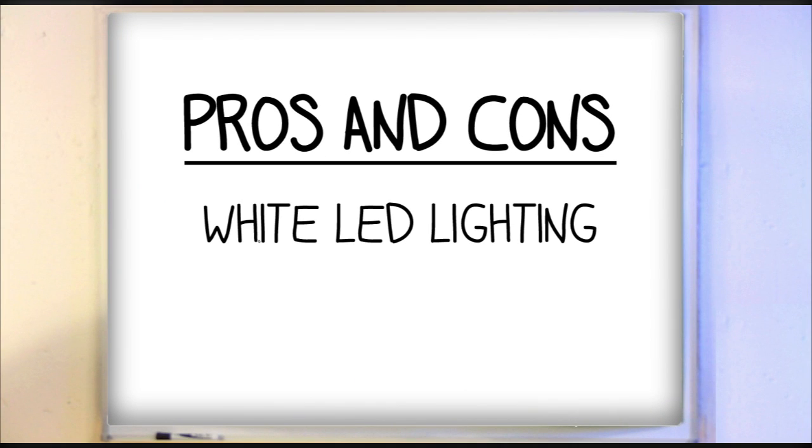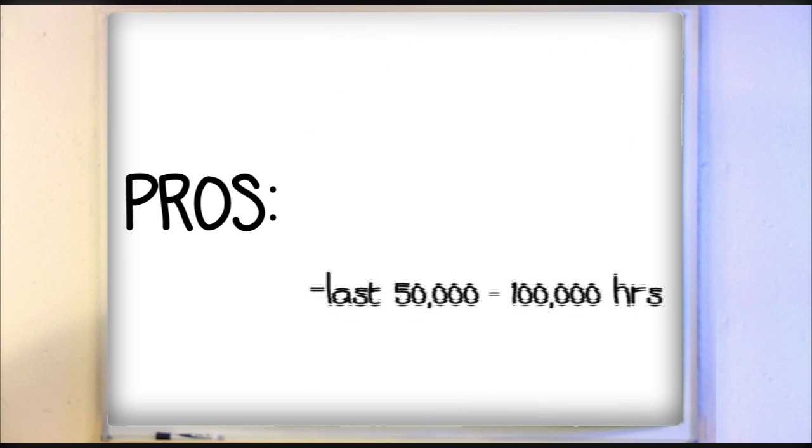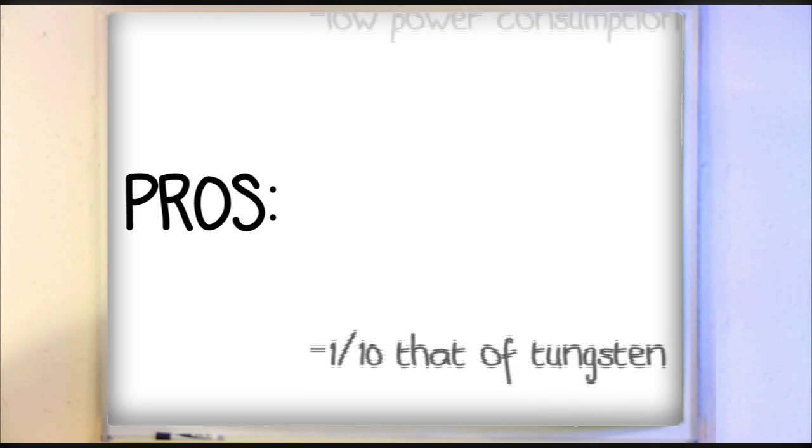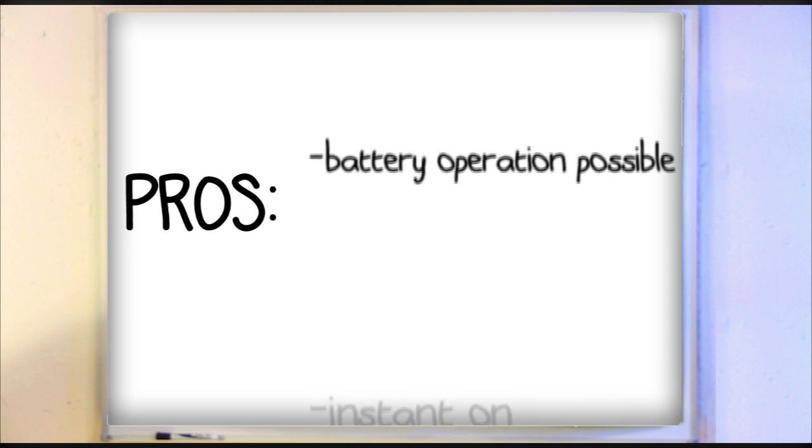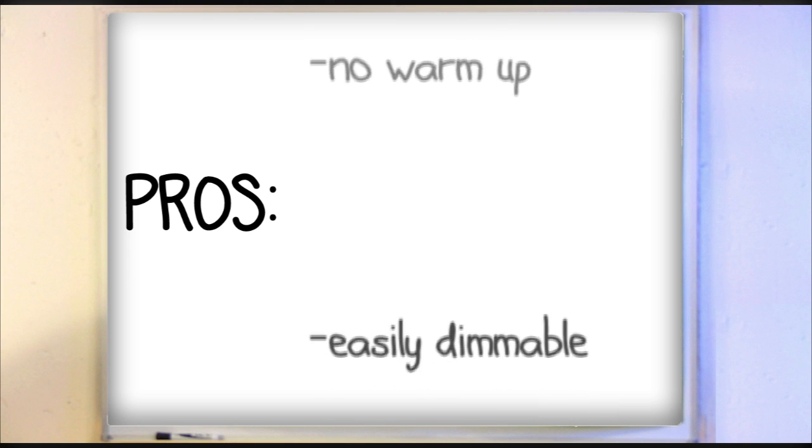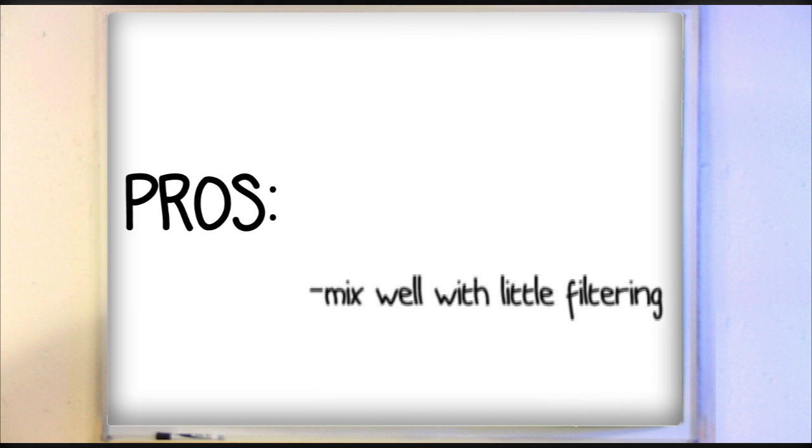So now let's compare the pros and cons of white LEDs as light sources. The pros: white LEDs have a very long bulb life of between 50,000 to 100,000 hours. They have very low power consumption, about one tenth of an incandescent light. Because of the low power, there's a tremendous potential for battery operation. They're instant on and they have no warm-up. They're easily dimmable but they do have a slight color shift. And they mix well with daylight with minimal color correction filtering.